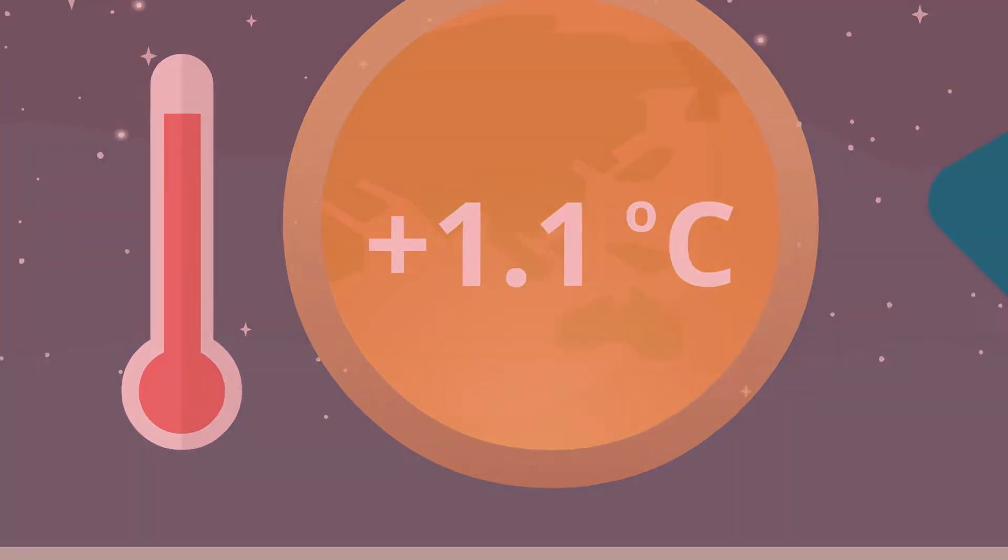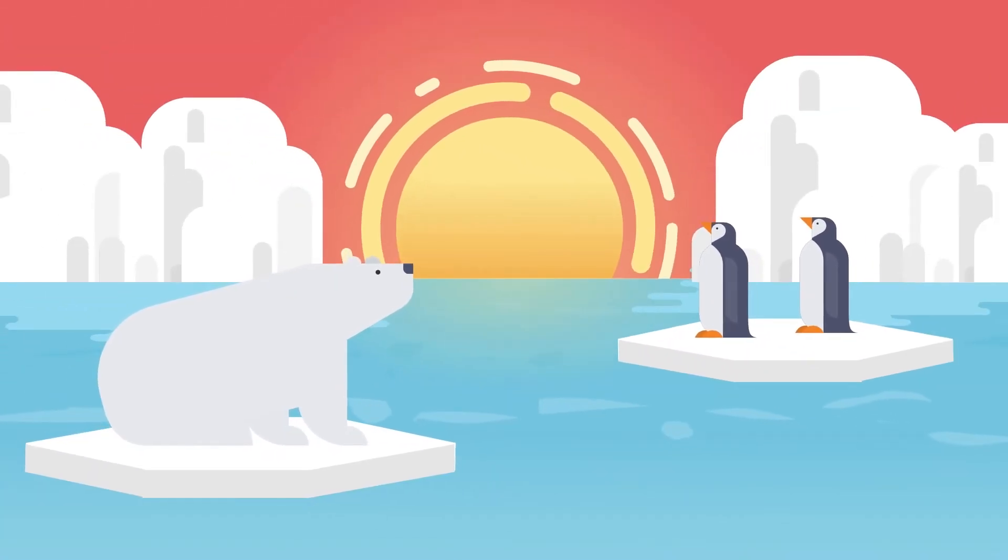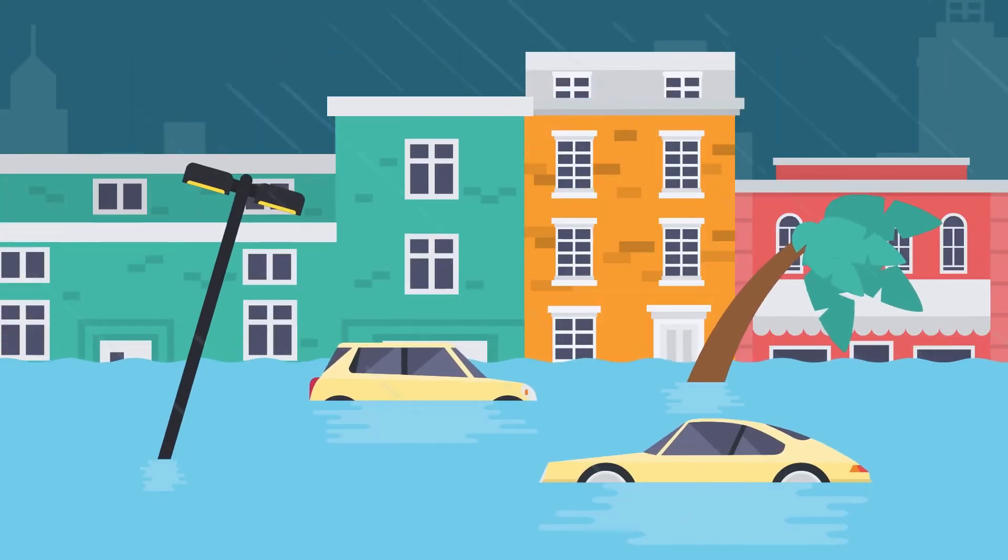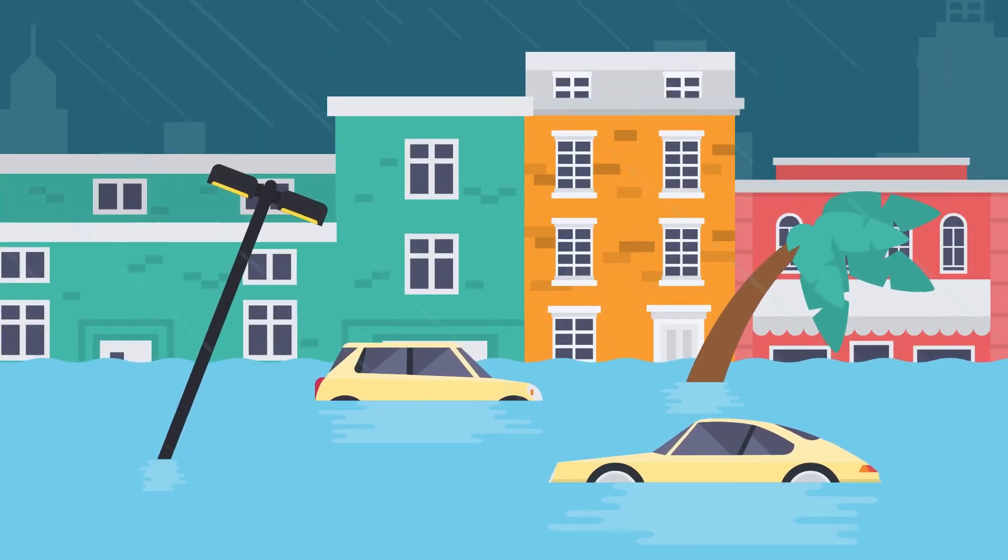but the impact it has made over time is devastating. One of the most well-known issues to a warmer planet is the melting of our polar ice caps, which causes the sea level to rise, leading to the increase of destructive flooding in many coastal areas.